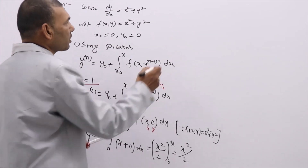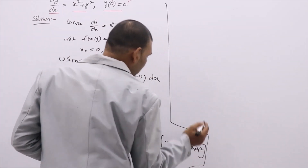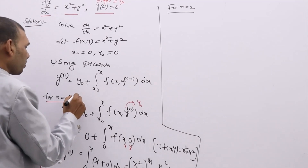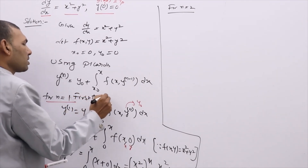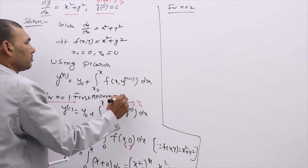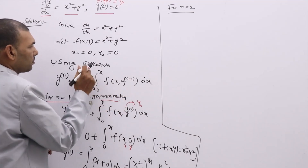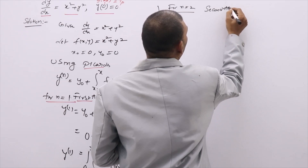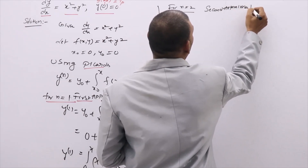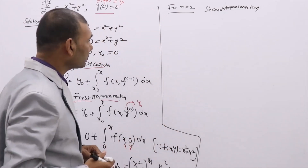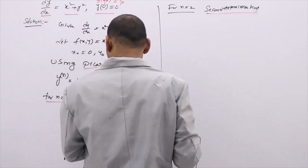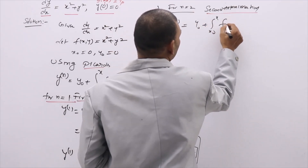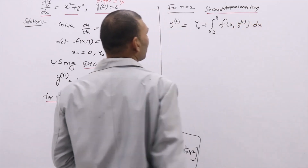Coming to the second approximation: write as many approximations as possible. For n equal to 2 you get the second approximation. The second approximation is y₂ equals y₀ plus the integral from x₀ to x of f(x, y₁) dx, where y₁ is the first approximation already evaluated.